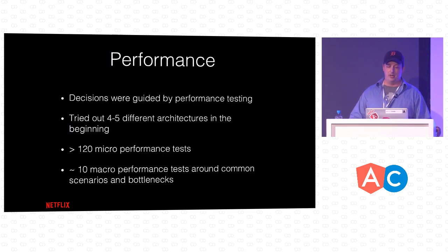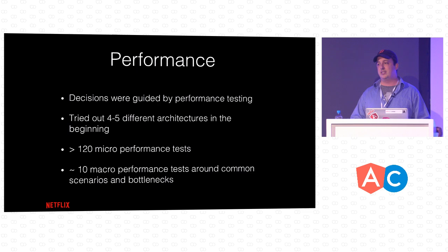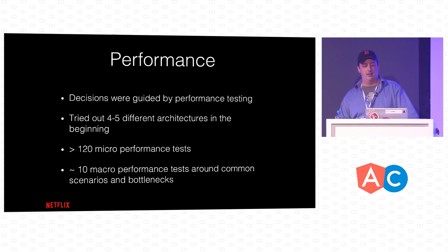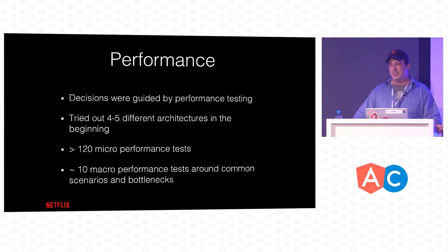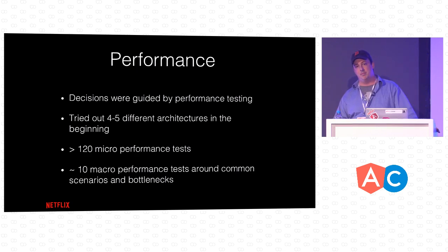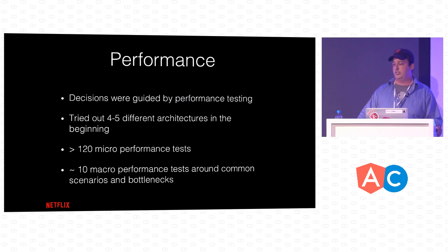All of the decisions we made were guided by performance tests. We went through somewhere between four and six different architectures, tested them against each other to see which was fastest, and finally ended up on one called the lift architecture, developed by Paul Taylor. We have more than 120 micro performance tests, and also 10 to 12 macro performance tests using Angular's benchpress tool, covering common bottlenecks and potential memory-leaky areas of RxJS.